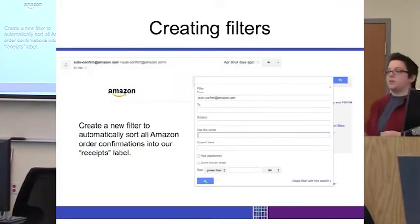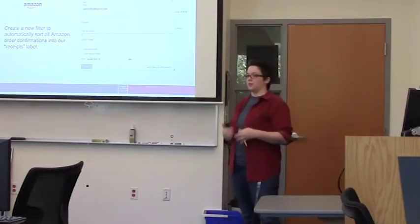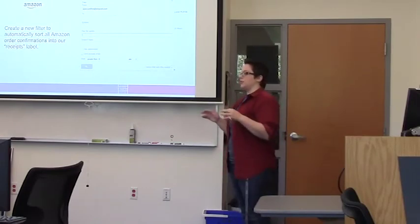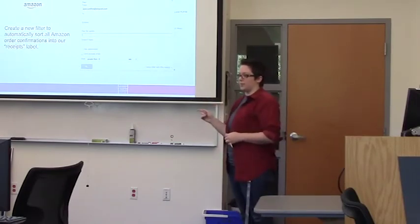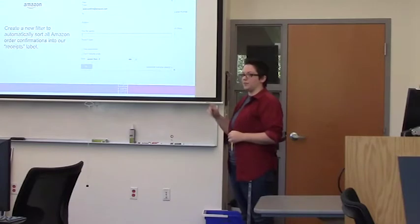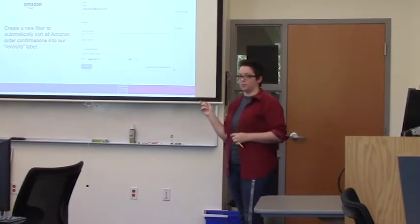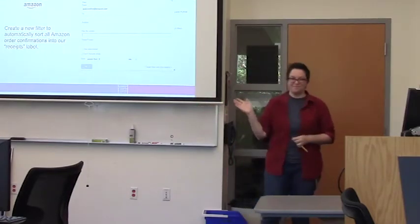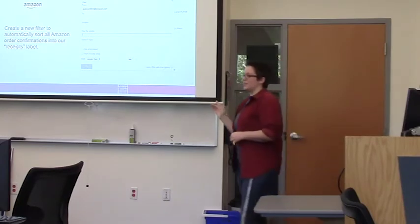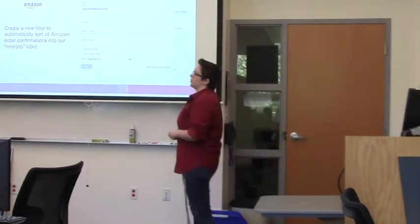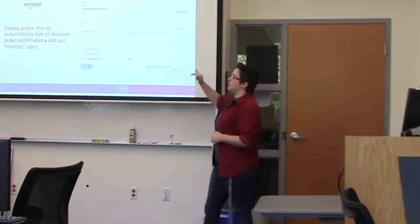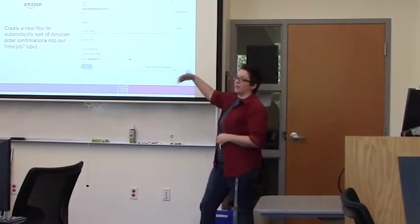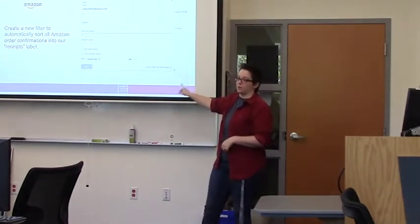You can do this from a message itself. So if you get a message that you want to start filtering, you can access it in the message itself, in the email itself. And this exact same box will come up. Or it should. Will it be filled in if you're accessing it from? Yes. So it will be automatically filled in. It will put the email address that that message came from automatically in that little line.